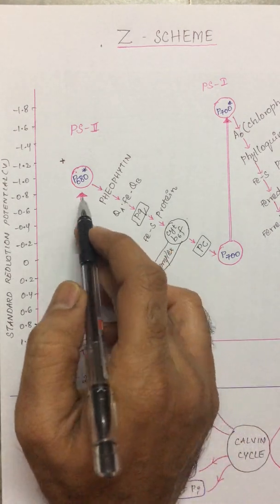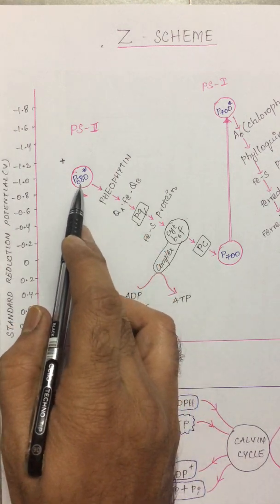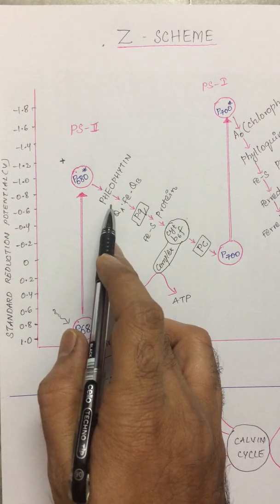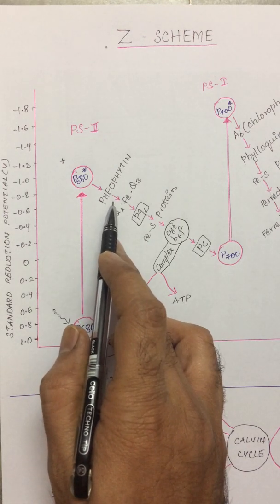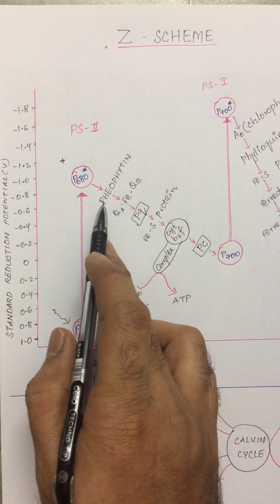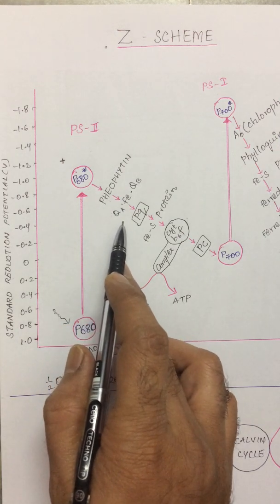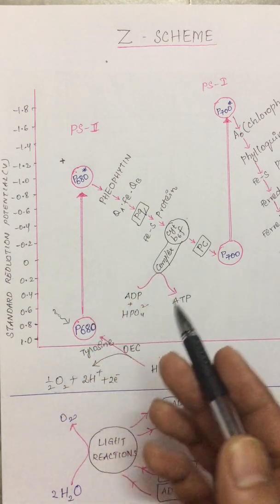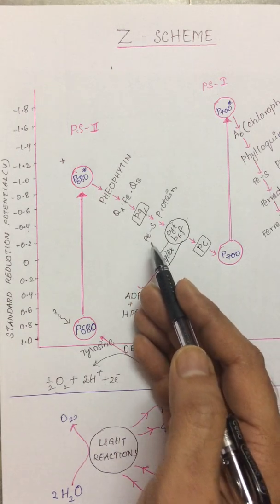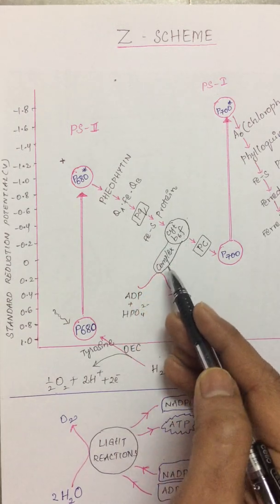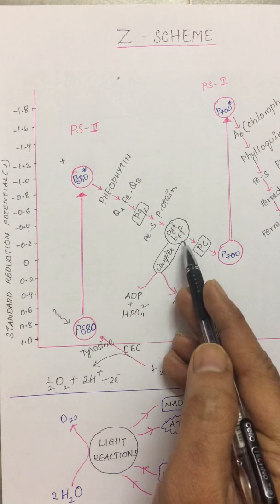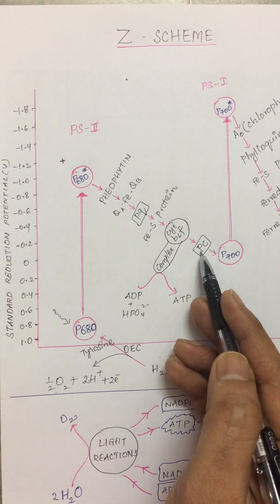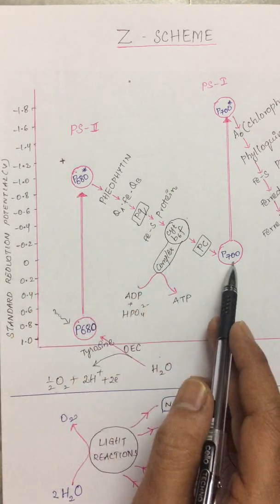Getting back to the photosystem: once P680 gets excited and gives away its electron, that electron is accepted by the first electron acceptor, called Pheophytin. Pheophytin slowly passes the electron into a quinone iron complex, then to a plastoquinone, to an iron sulfur protein, then to the cytochrome B6F complex, and later on to plastocyanin. Plastocyanin is the connecting link between Photosystem 2 and Photosystem 1.